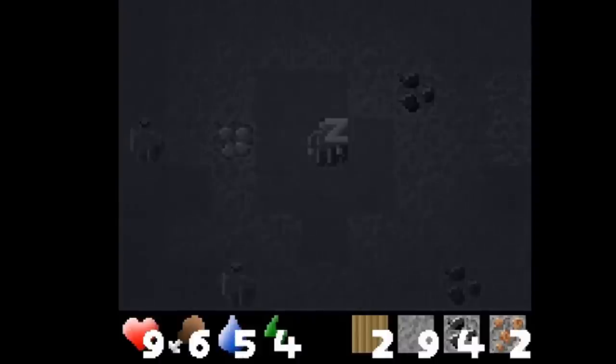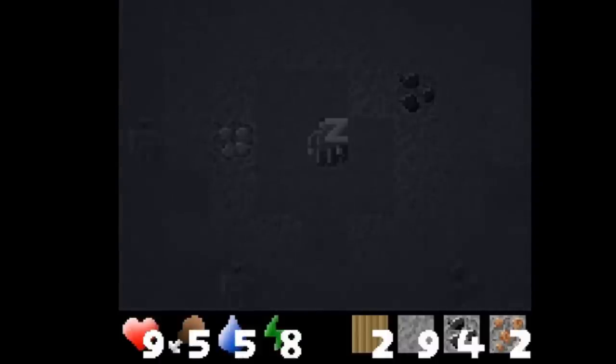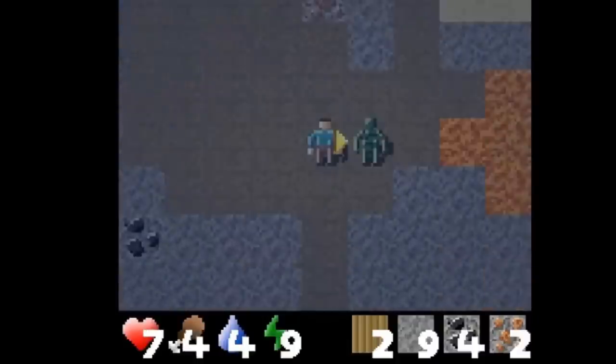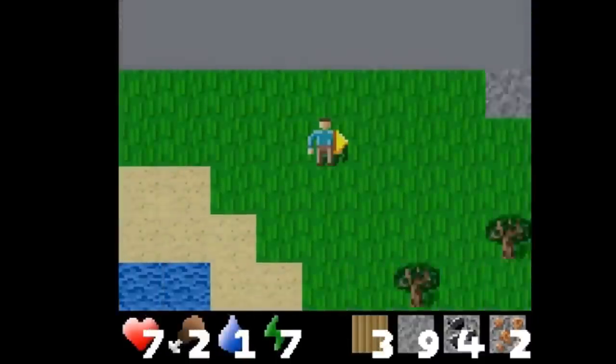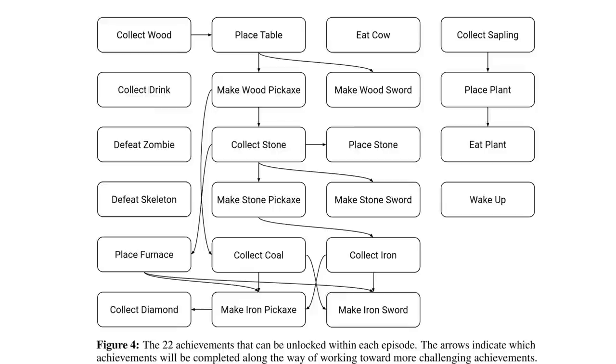Once the agent dies and a new episode begins, it is spawned into a newly generated random world, meaning that to learn, the agent has to be able to generalize to different layouts and can't rely on hard-coded patterns. Throughout the course of an episode, there are 22 total unique achievements an agent can earn, all of which you can see right here.